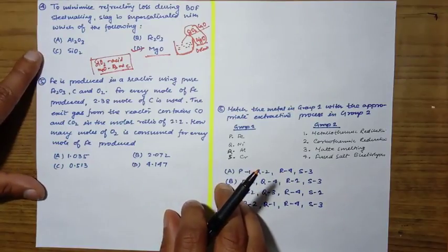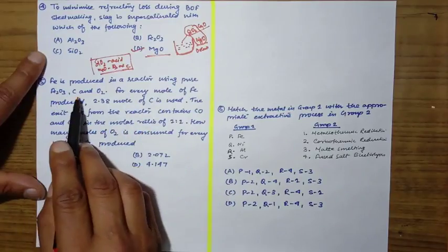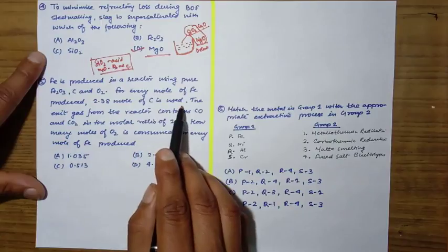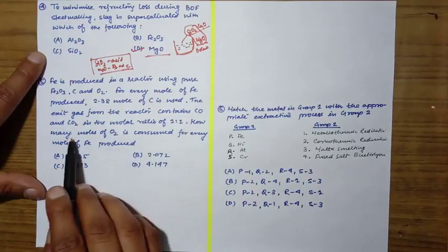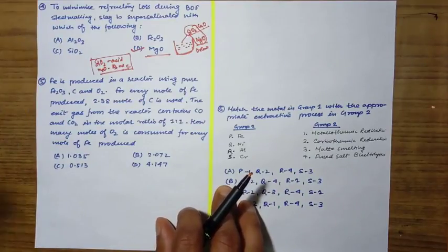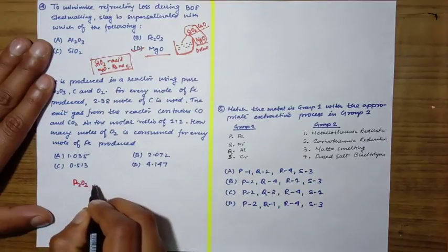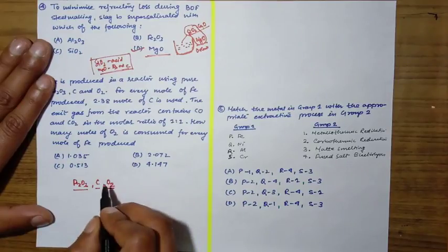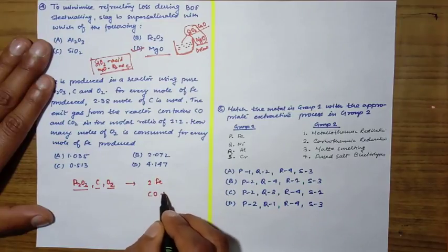Next question: Fe is produced in a reactor using pure Fe2O3, carbon, and oxygen. For every mole of iron produced, 2.38 moles of carbon is used. The exit gas contains CO and CO2 in molar ratio 1:1. How many moles of O2 is consumed for every mole of Fe produced? We have three raw materials: Fe2O3, carbon, and oxygen.